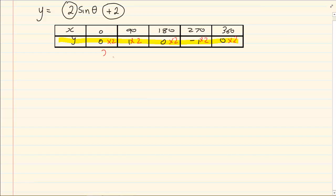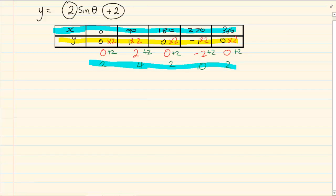So 0 times 2 is 0. 1 times 2 is 2. 0 times 2 is 0. Minus 1 times 2 is minus 2. 0 times 2 is 0. Now we are going to add 2. So we now have 2, 4, 2, 0 and 2. When we are drawing the graph we are going to use this x value and the last y value that we added.